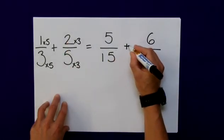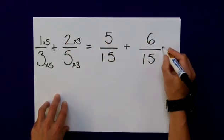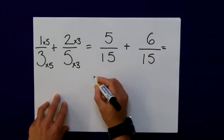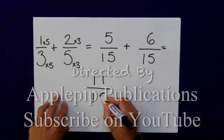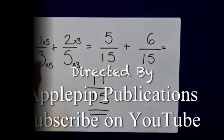I can now do the addition. 5 plus the 6 is equal to, I'll write it down at the bottom, 11. And the denominator remains the same. Fifteenths. I hope that helps.